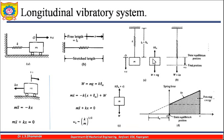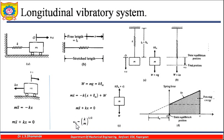The free body diagram shows k times (delta_st + x) acting upward and w acting downward. Since k·delta_st and w cancel, only kx remains upward and m·ẍ as inertia. This is the comparison between horizontal and vertical longitudinal systems — the equation is the same. Dividing by m gives ẍ + (k/m)x = 0. Comparing with simple harmonic motion, omega_n squared equals k/m, so omega_n equals the square root of k/m.